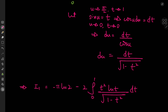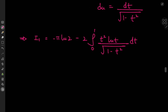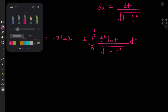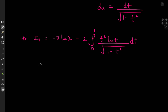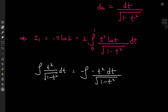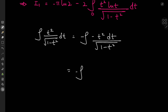For this integral, we use integration by parts, integrating the t squared over square root of 1 minus t squared term. This requires a somewhat unusual antiderivative. I introduce a zero as 1 minus 1, giving the integral of 1 minus t squared over square root of 1 minus t squared dt minus the integral of dt over square root of 1 minus t squared.